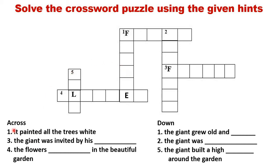Let's start solving across. Number one says: it painted all the trees white. You can see that the word starts with F. Which word in the story painted the trees white and starts with F? Yes, it's frost. Very nice.